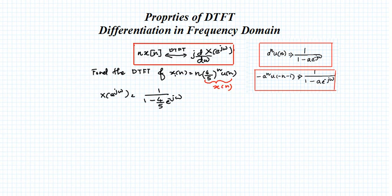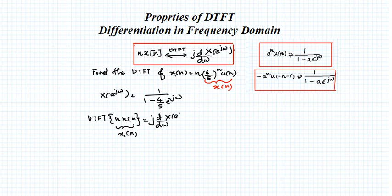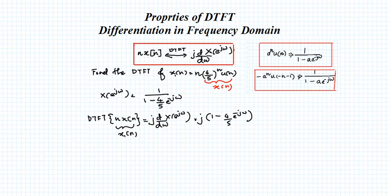Now we need to find the DTFT of x1(n) = n·x(n). Using the differentiation property, this equals j·d/dω of X(e^jω), where X(e^jω) = 1/(1 - (4/5)·e^{-jω}). We rewrite this as (1 - (4/5)·e^{-jω})^{-1} and need to take its derivative with respect to ω.